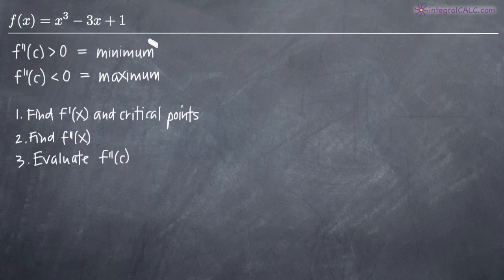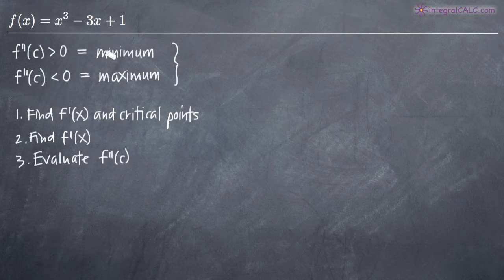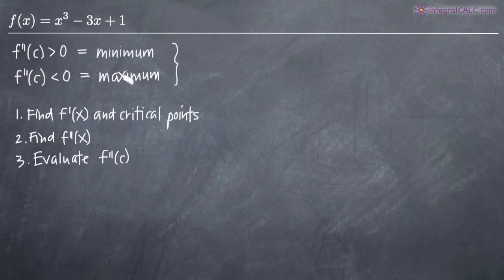The second derivative test tells us that if we find the critical points of a function and then evaluate them in the second derivative, if we get a positive result or a result that's greater than zero, we know that that critical point represents at least a local minimum. And if we get an answer that's negative or less than zero, we know that the critical point represents a local maximum.